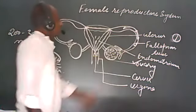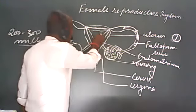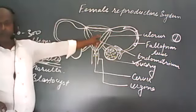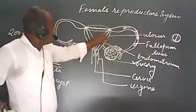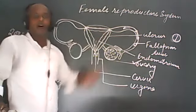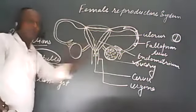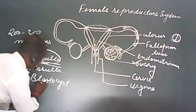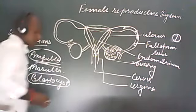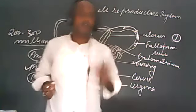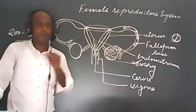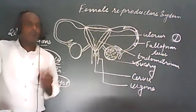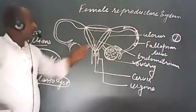The zygote comes inside the uterus. If we see the structure of the uterus, the entire cavity inside is called the uterine cavity, and there is a lining called the uterine wall. When the zygote develops into the morula and then into the blastocyst, there is a development of finger-like outgrowths in the blastocyst called villi.